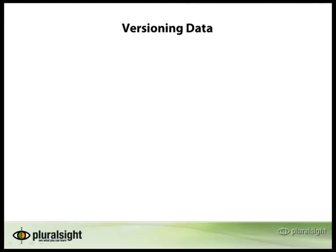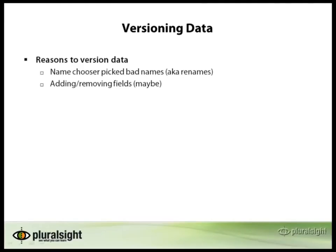Let's dig a bit deeper into versioning data. When you version data, there are a couple big reasons why you're going to want to pick a new version. One is that the name chooser picked bad names and you need to rename some of the elements. Sometimes the developer or project manager who picked the original names picks names that wind up being confusing, leading to a common set of bugs related to poorly named items. In this case, pick new names and create a new version.